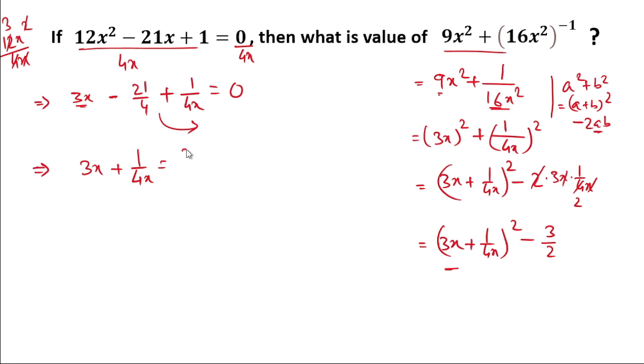So friends, here we have got the value of 3x + 1/4x equals 21/4. We'll put this value in our expression. It will be (21/4)² minus 3/2.